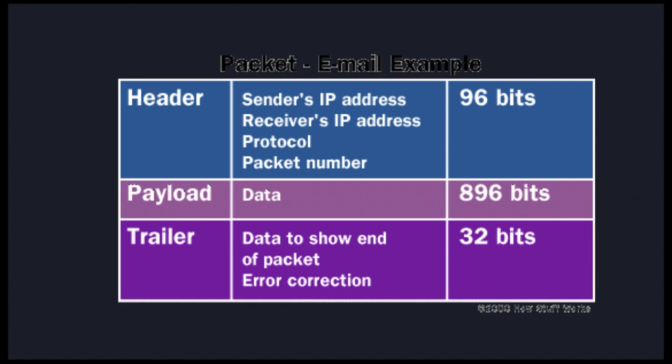Let's say that you want to send a picture by email from your computer to your friend's computer. Each of your computers has its own IP address that identifies it. In the data packet — one of many pieces of data being sent — you're going to have the IP address for your computer in the header, the IP address of your friend's computer, and the protocol, which is the set of rules that your data follows.